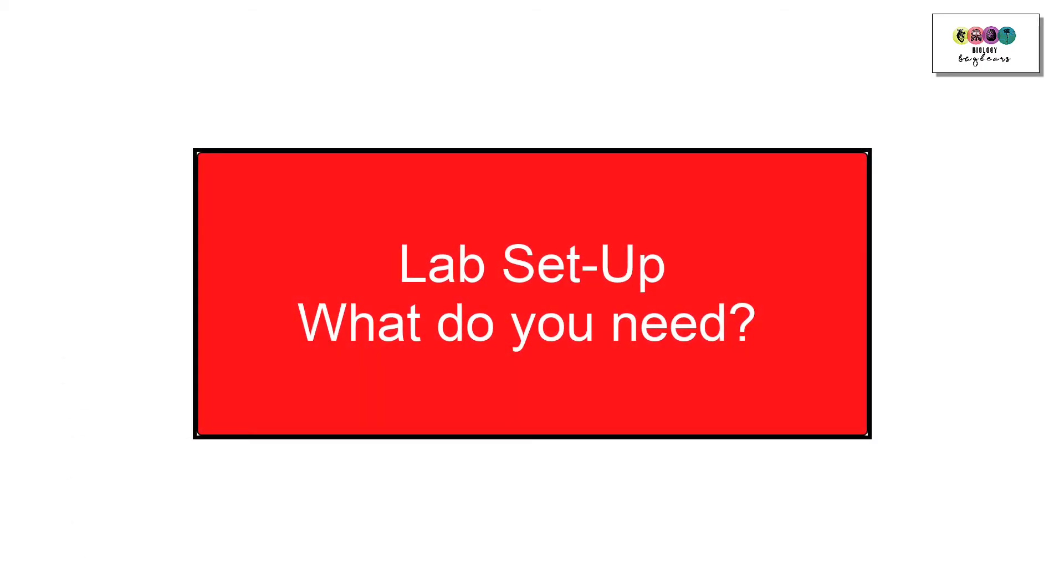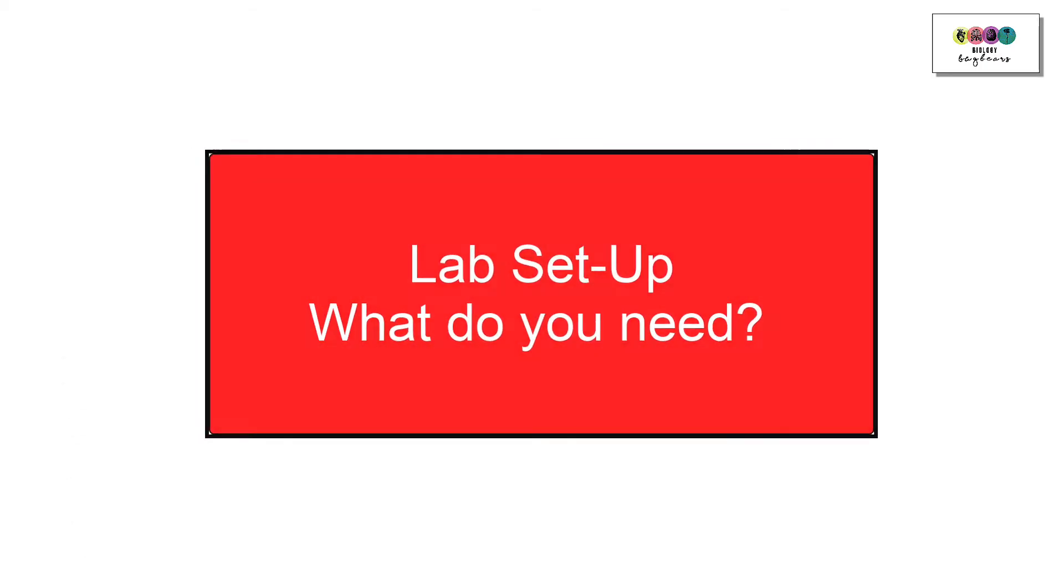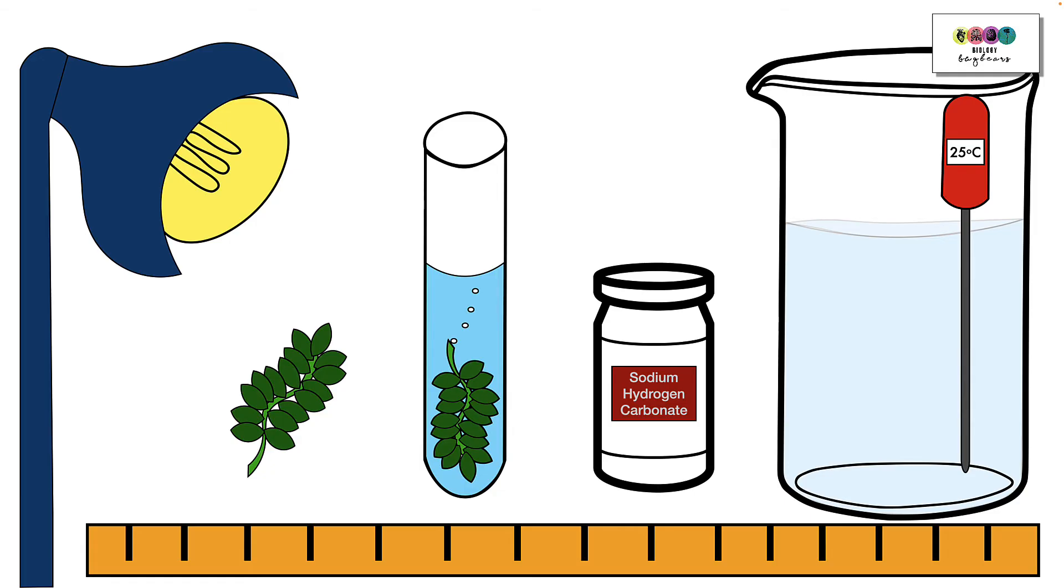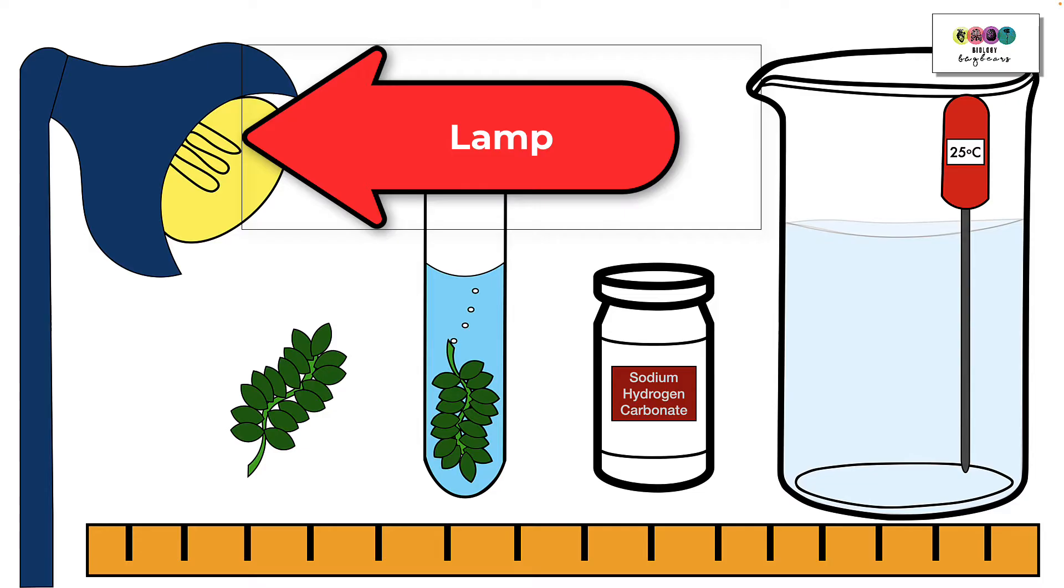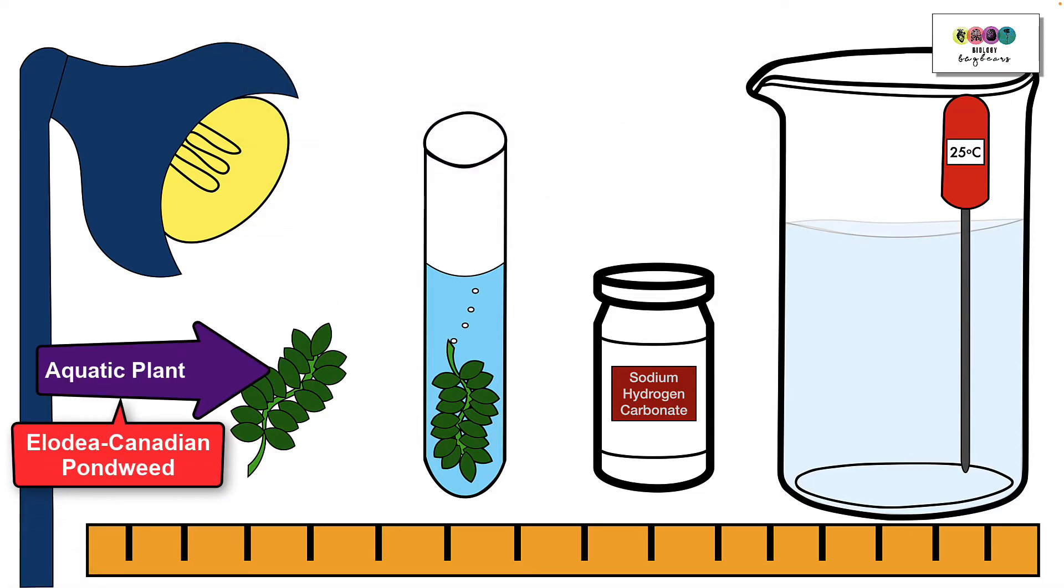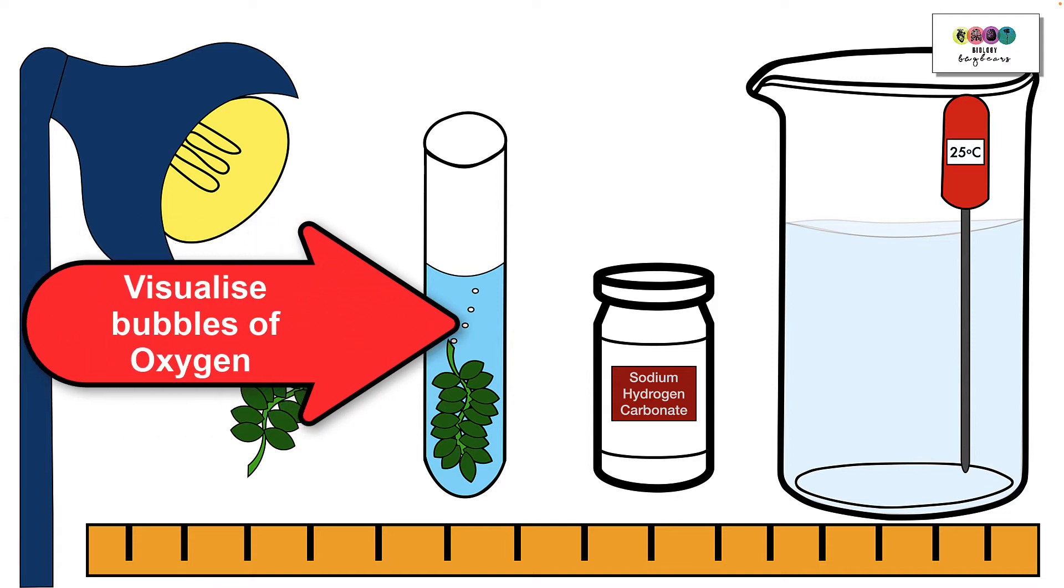Firstly we start with a lab setup. Here is your basic lab setup, this is all the material you need. For example you need the lamp for your light source, but most importantly you need an aquatic plant, some type of pondweed, for example Elodea or Canadian pondweed. The reason why you need an aquatic plant is because you have to keep the plant underwater to visualise bubbles of oxygen.